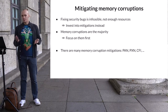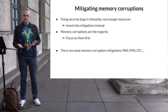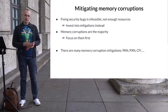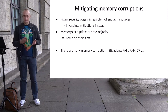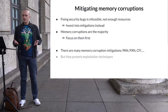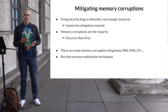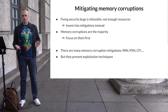For example, PAN and PXN, which prevent the kernel from directly accessing user space, or CFI, which doesn't allow the kernel to call wrong function pointers. However, these mitigations target exploitation techniques — they do not try to prevent memory corruptions from happening in the first place. And this is where memory tagging comes in.